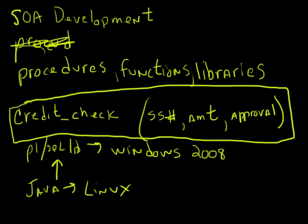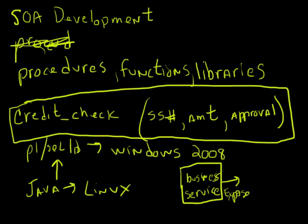What if you had some kind of mechanism where you could create a chunk of code that does a very specific business service — like doing a credit check? That's an example of a business service — something that returns an approval for a particular customer. What if there was some way you could create this kind of business service and then expose it on the internet — or technically over TCP/IP? You could expose it over TCP/IP and it wouldn't matter. The language wouldn't matter. The OS wouldn't matter. Nothing would matter. You could just have this business service exposed over TCP/IP and any language you wanted could then call this business service.